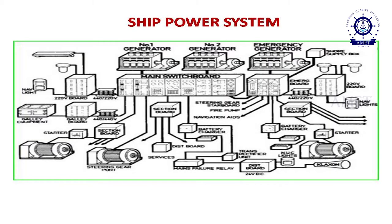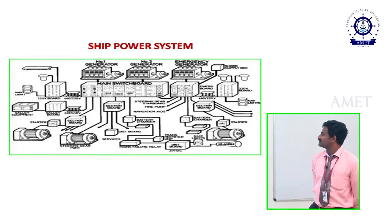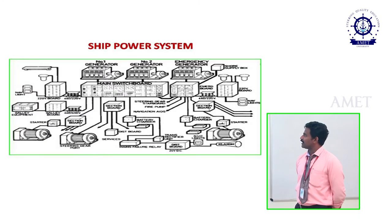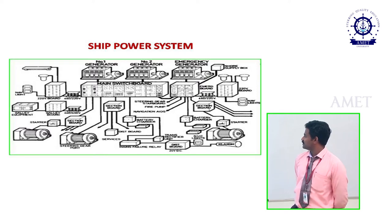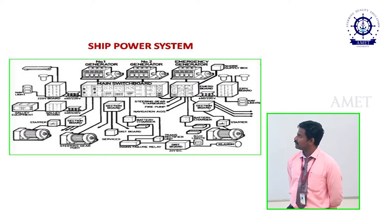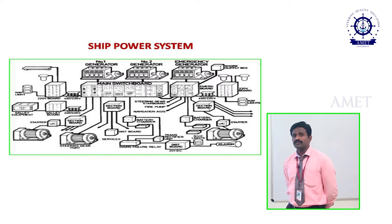Before going to our topic, we must know about the basics of power generation and distribution on ships. This is the main block diagram of ship power distribution. This is the entire electrical circuit diagram of ship power distribution. In a ship, mostly according to SOLAS regulations, we have 3 to 4 generators.